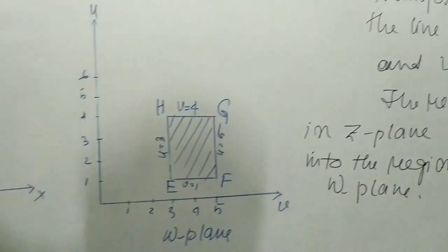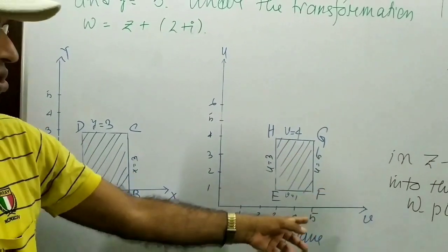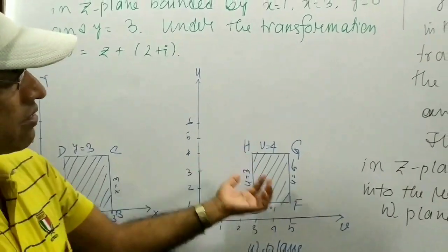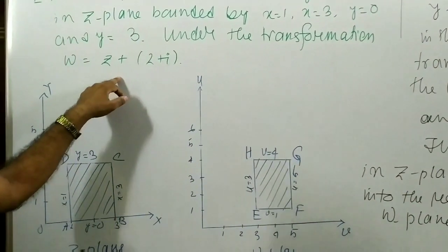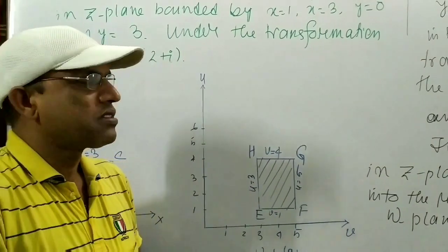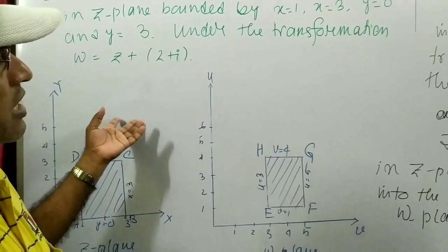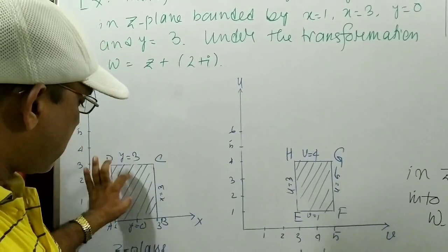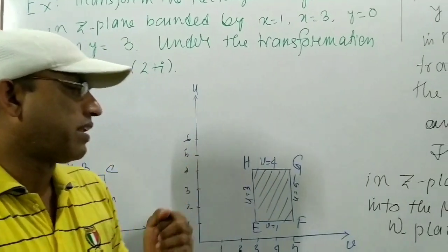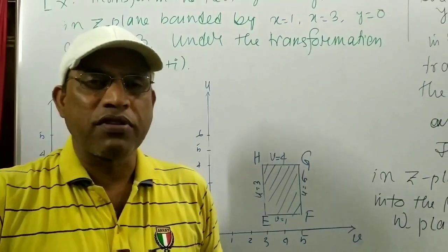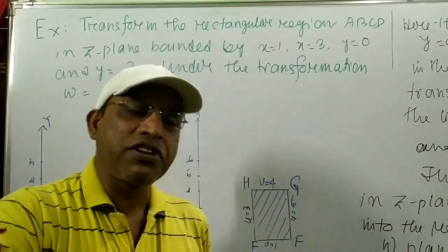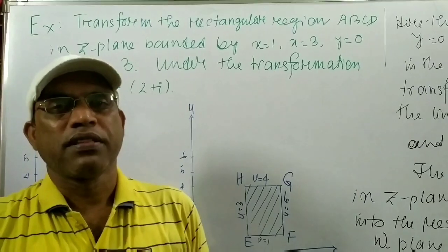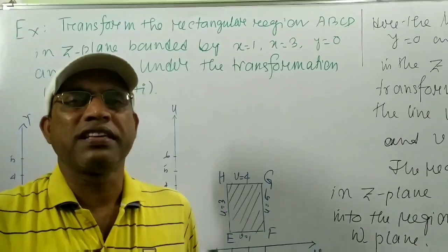This is our solution to the given problem. From one figure in the z-plane, we get another figure in the w-plane using the given transformation condition. This is called transformation — ABCD in the z-plane maps to EFGH in the w-plane. Today I stop here. In the next video, we shall discuss another similar problem. All of these are very easy.